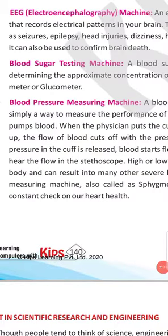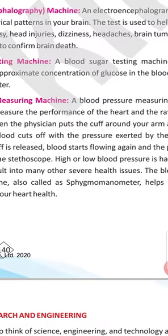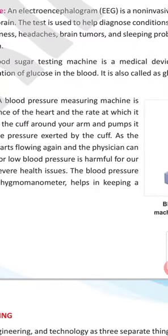Next one: EEG — Electroencephalography Machine. With this machine, we will diagnose about a patient's brain — some head injury in the brain, whether it is okay or not, brain death, headache, brain tumors, and sleeping problems. EEG is related only to brain problems.